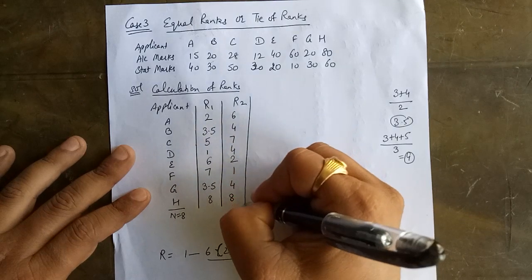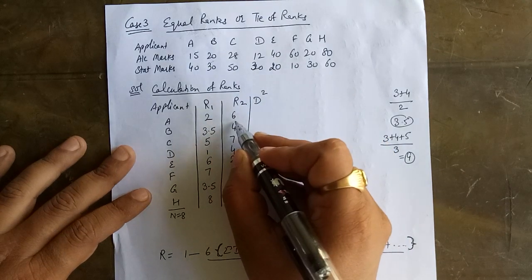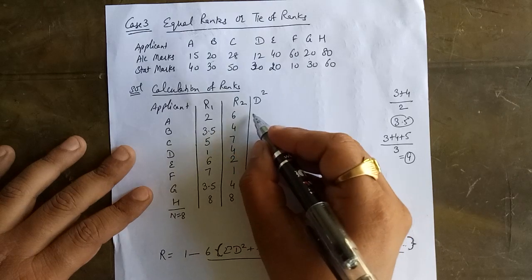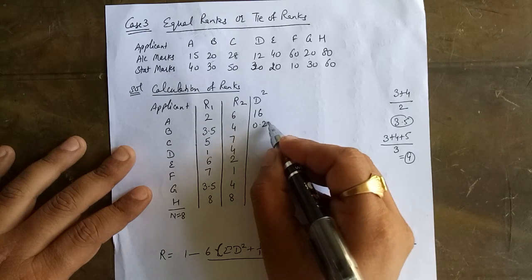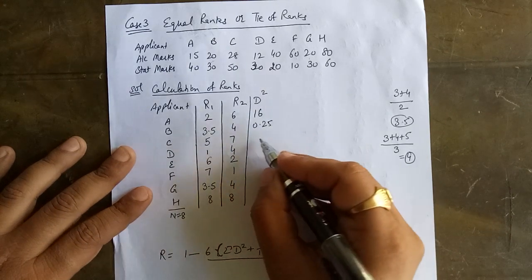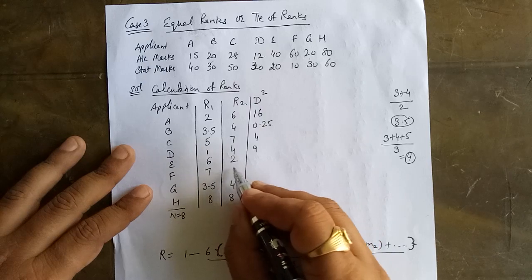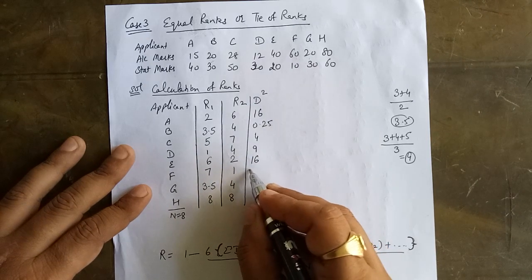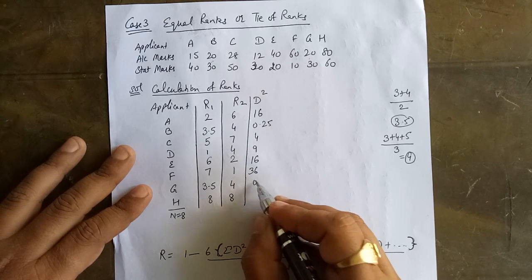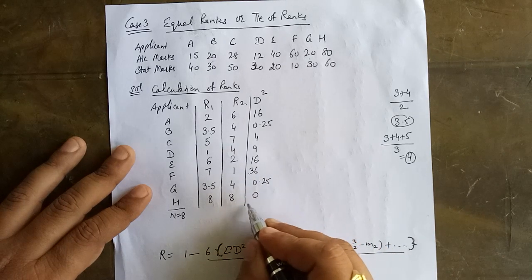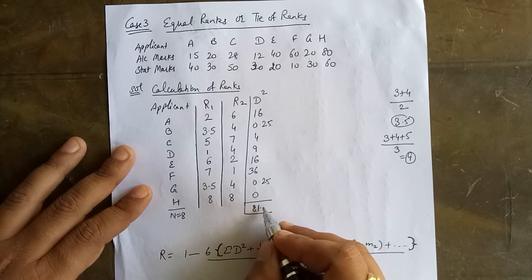Now we calculate D equals R1 minus R2 and then D-squared for each applicant. The gaps and their squares are: gap of 4 gives 16; gap of 0.5 gives 0.25; gap of 2 gives 4; gap of 3 gives 9; gap of 4 gives 16; gap of 6 gives 36; gap of 0.5 gives 0.25; gap of 0 gives 0. The total sigma D-squared equals 81.50.